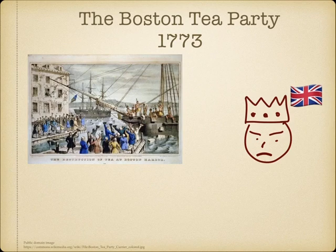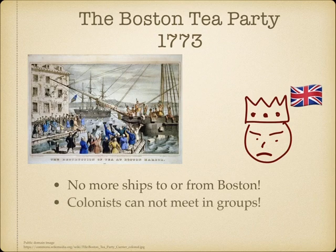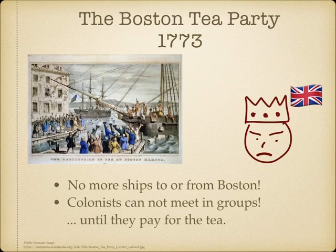The British government was not very happy about this. They made some rules that said no more ships could come to or go out of Boston. The colonists also cannot meet in groups until they pay for all of this tea that was thrown into the water. So there was starting to be some more problems with the government. What would the colonists do? Would they pay for this tea? Would they really not meet in groups to talk about things? We will learn more in the next lesson.